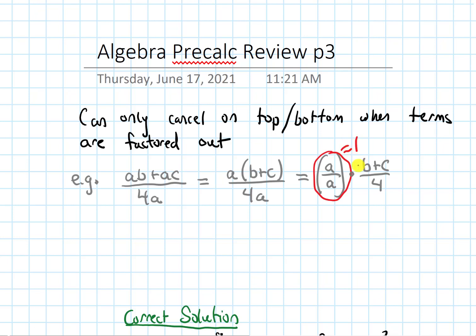And when you multiply 1 by something, you just get that something. So that leaves us with (b+c)/4. And this is actually technically why cancellation works. It's because when you do cancel, technically you're just creating 1. And when you multiply by 1, that 1 just goes away.